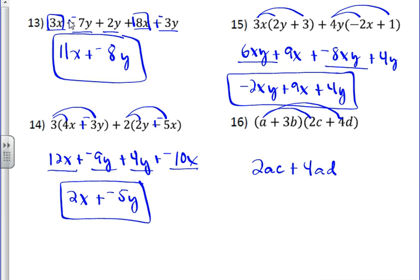So that's the first distributive property. The second distributive property is 3b times 2c, which is 6, 3 times 2, and then bc. And then 3b times 4d is 12bd.